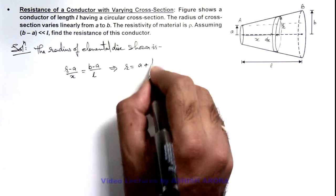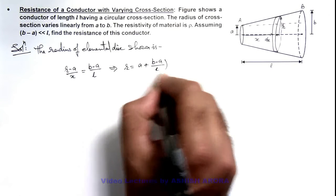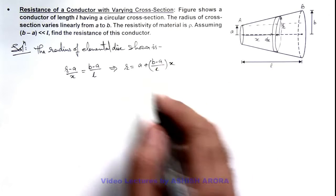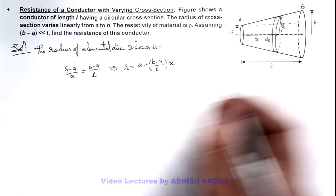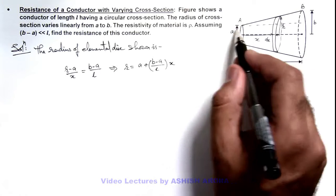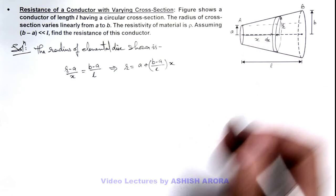Using which I can write the value of r equals a plus [(b - a)/l] × x. This relation can also be directly written by the linear relationship from a to b with distance x.